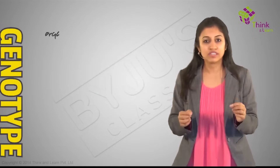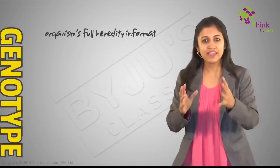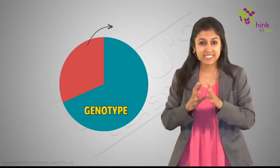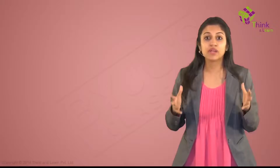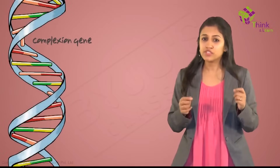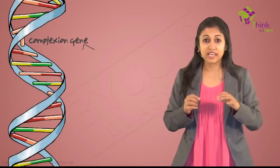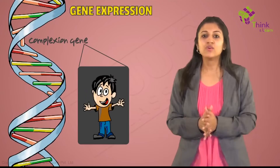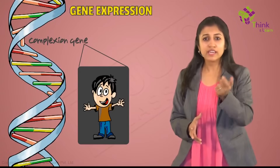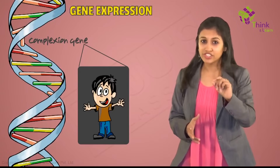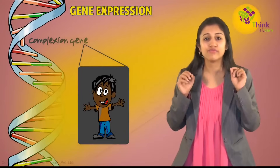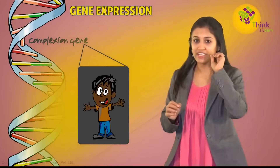Genotype is an organism's full hereditary information. The part of the genotype that is expressed is called the phenotype. Expressed just means when the information that is there in your genes gets manifested or shown — that's called gene expression. The phenotype that you see is because of the combination of the genotype that you have and the environmental factors that affect it. We're going to see how exactly in a short while.